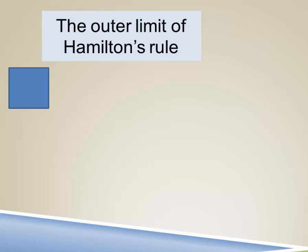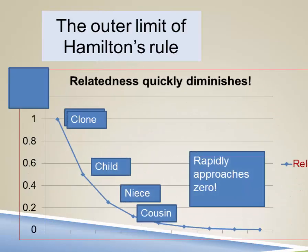In an earlier presentation, we noted that Hamilton's rule has an outer limit that can be defined very easily, because relatedness falls by one half with each step away from the focal individual. So your child has a 50% likelihood of sharing a gene identical by descent with you. By the time you get to your niece or grandchild, that's halved to 25%, and by a first cousin, it's cut in half again to 12.5%. Quite quickly, relatedness approaches zero.